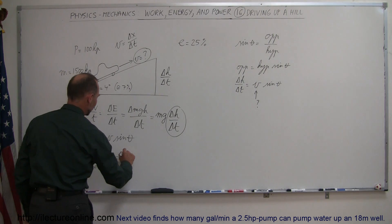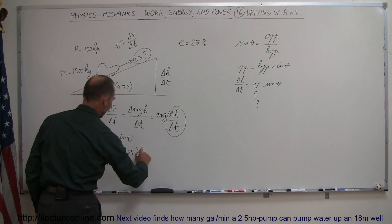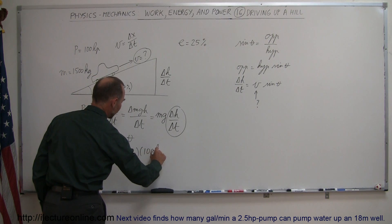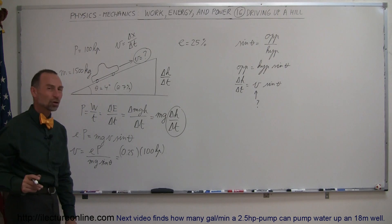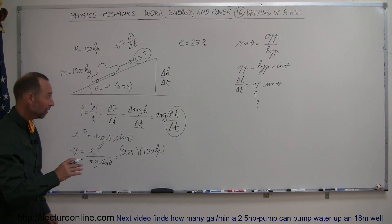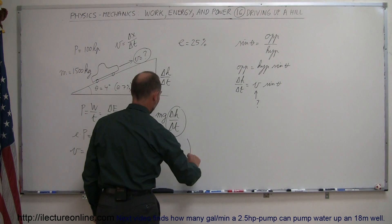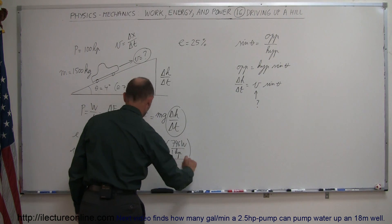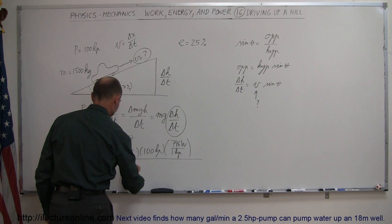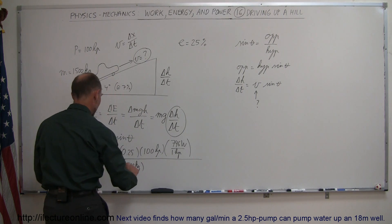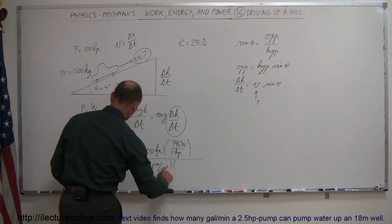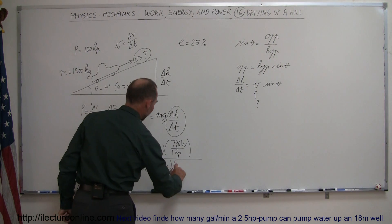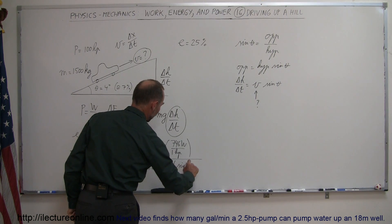So now we have efficiency of 25%, 0.25, times the power, 100 horsepower. Of course, horsepower is not a standard unit, so we have to convert that to watts, and so the conversion for that would be 746 watts per one horsepower, and divide the whole thing by the mass, 1500 kilograms, times G, which is 9.8 meters per second squared, times the sine of the angle, which would be the sine of four degrees.